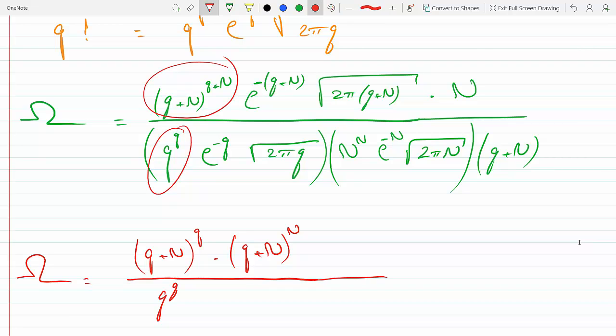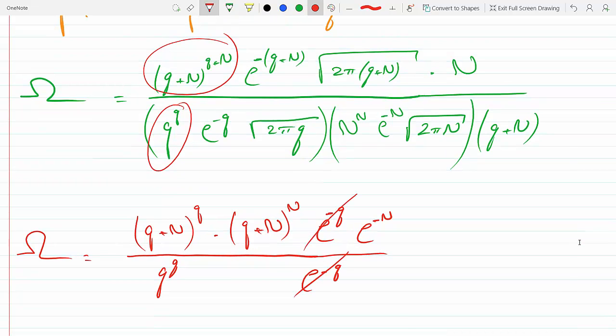I'm going to split up the e, so the e will become e to the minus q times e to the minus n because that minus sign distributes. And here I have e minus q, so I can cross out these couple guys here. And then I have the square root, so here I have 2π(q+n).